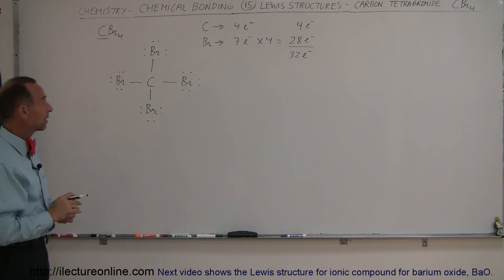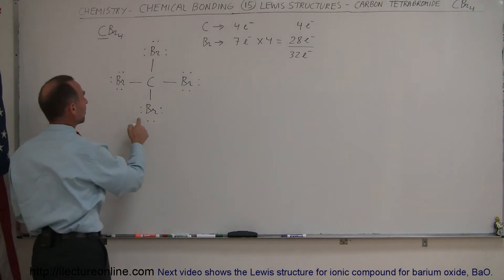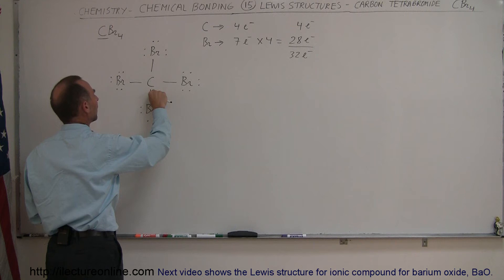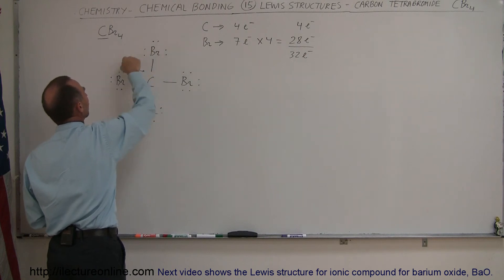Now, quick, let's see if the octet rule is followed. Well, each bromine atom has six free electrons and two tied up in the bonding right here. So part of the time, each bromine atom can have eight electrons. So the octet rule is okay for bromine.